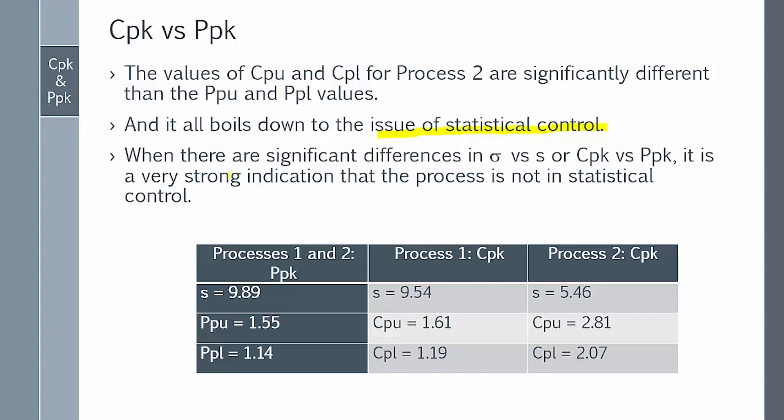When there are significant differences in the standard deviations for CPK versus PPK, it's a very strong indication that your process is out of control. And this table shows us that for process 1 and 2, we had a standard deviation at 9.98. When it's in control, 9.54, very similar. When it was out of control, 5.46, very different.